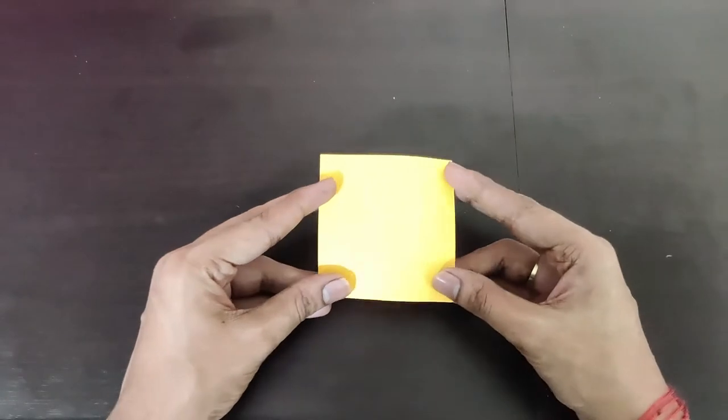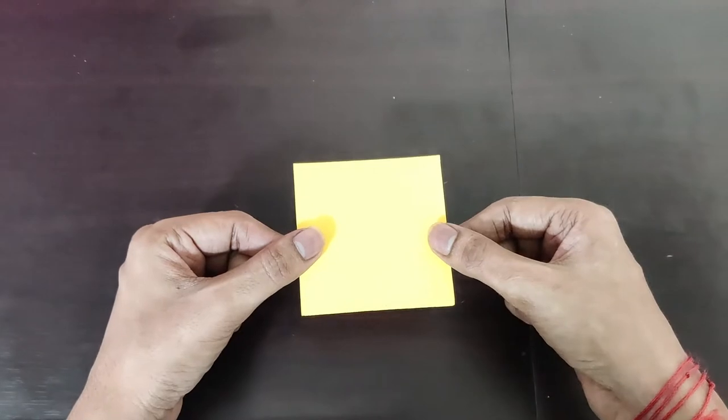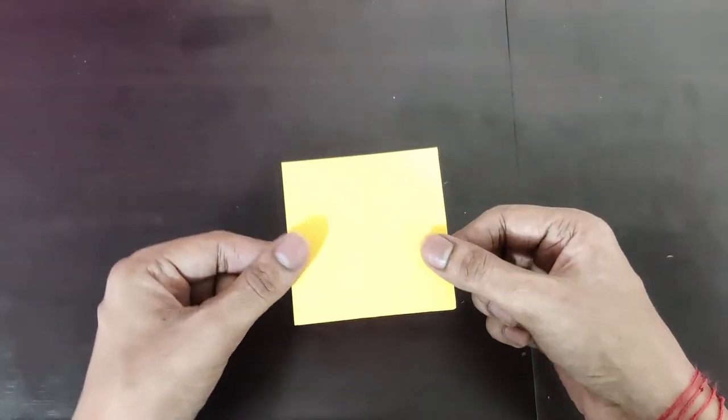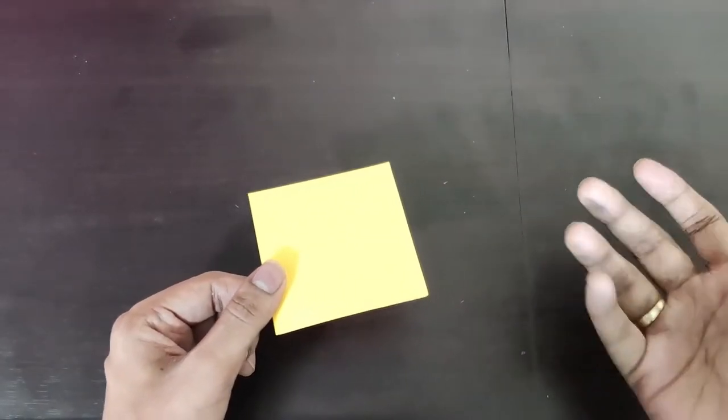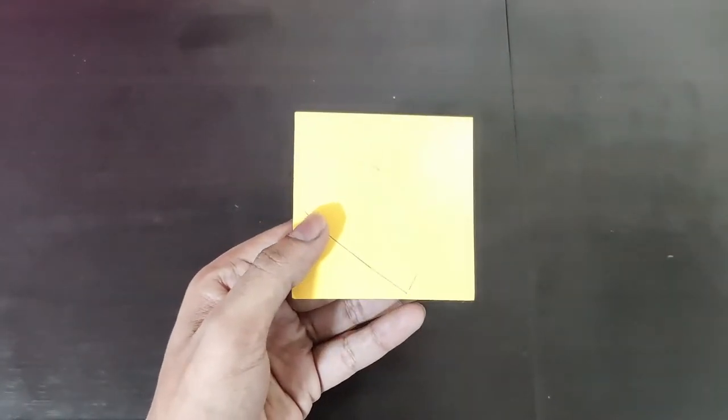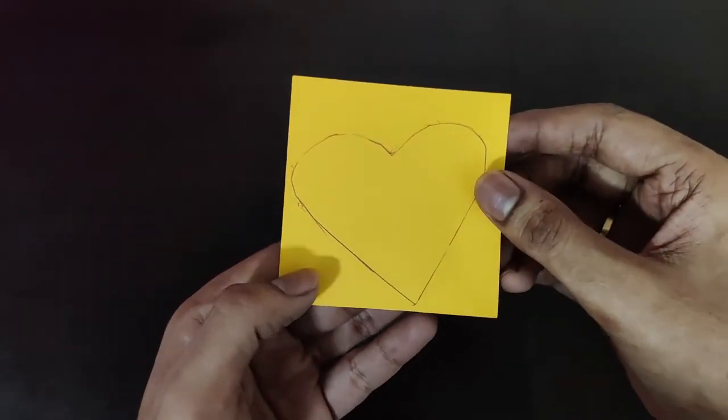So without further delay, let's check it out. For this waterfall greeting card model we'll need some square pieces of paper and some rectangular pieces of paper. This square piece of paper is of size 8 centimeter by 8 centimeter. We'll need such seven to eight different colors of paper to get the rainbow effect.